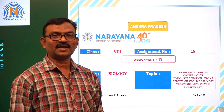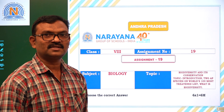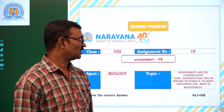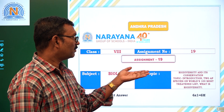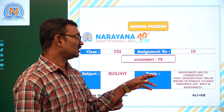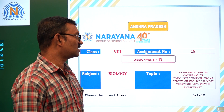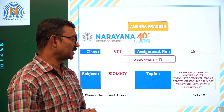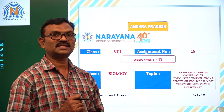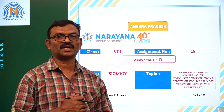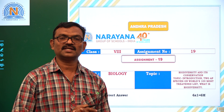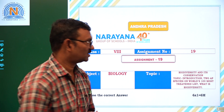Good morning students. Welcome to the Narada Life Classes. Today we are going to discuss Assignment 19 of 8th class. The topic is Biodiversity and its conservation — introduction to AP species on the world's 100 most threatened list. This assignment consists of 6 choose-the-correct-answer questions and 2 short answer questions. Now let us see what are the questions and their answers.